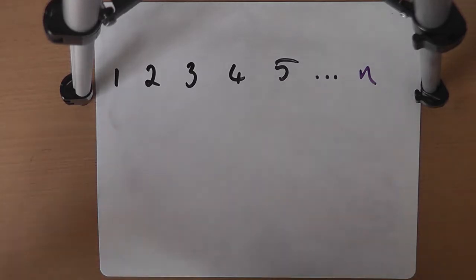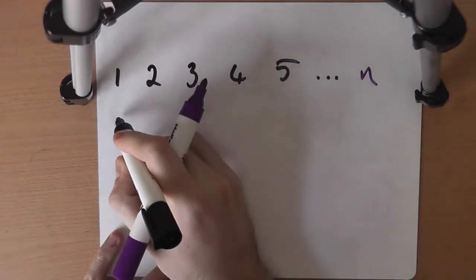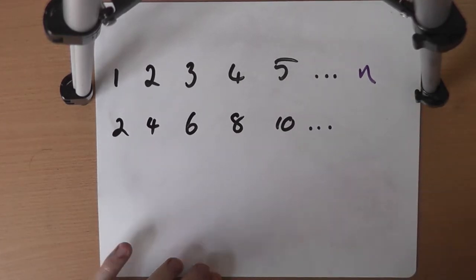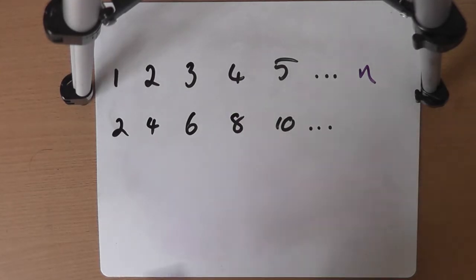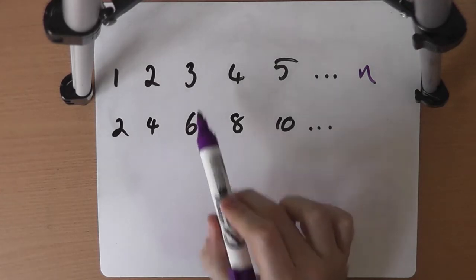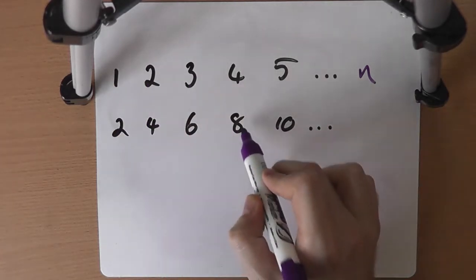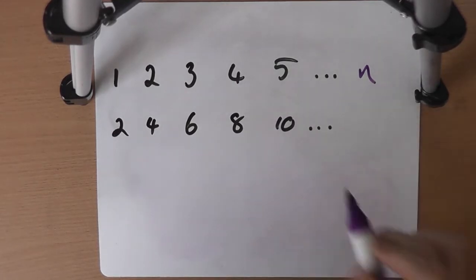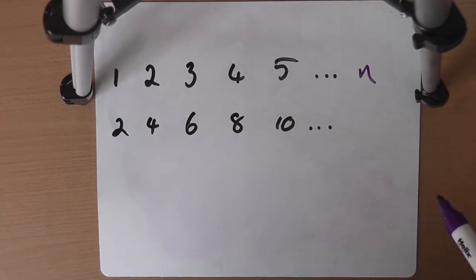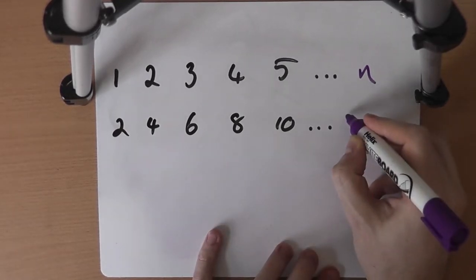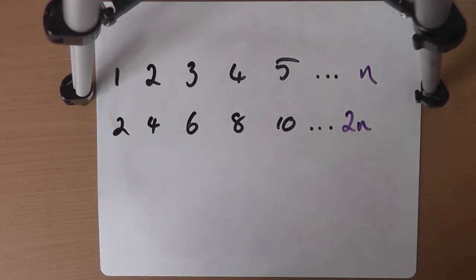We can then define any other sequence in relation to this. Think about the sequence 2, 4, 6, 8, 10. We might recognise that as the even numbers and also the 2 times table. If we compare these two sequences, in each case the number in the second sequence is twice as big as the corresponding number in the first: 2 and 1, 4 and 2, 6 and 3, 8 and 4, 10 and 5. So we could define an algebra rule: since this sequence is twice as big at every point, it will be 2n.